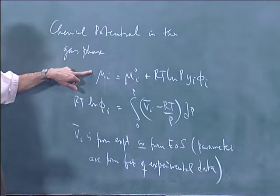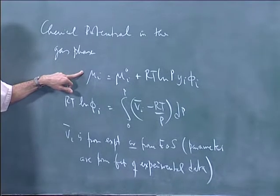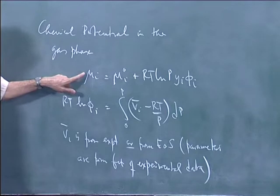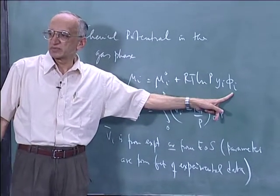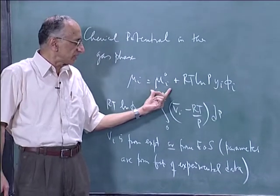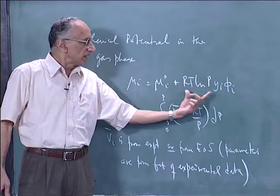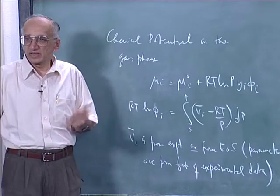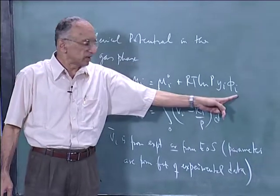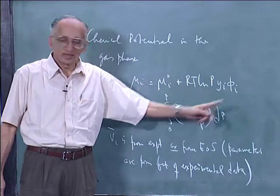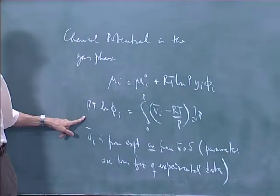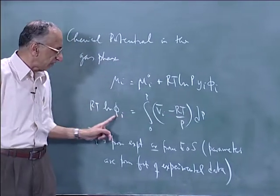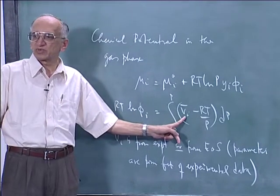The chemical potentials have to satisfy the Gibbs-Duhem equation. In this case, the chemical potential satisfies the Gibbs-Duhem equation if ln phi_i satisfies the Gibbs-Duhem equation. Because mu_i0 is a constant, RT ln P is a constant, and RT ln y_i will satisfy the Gibbs-Duhem equation anyway — that is the ideal mixture. So the only other term left is RT ln phi_i, and if RT ln phi_i satisfies the Gibbs-Duhem equation, you are through.